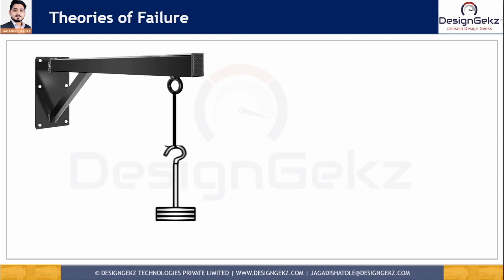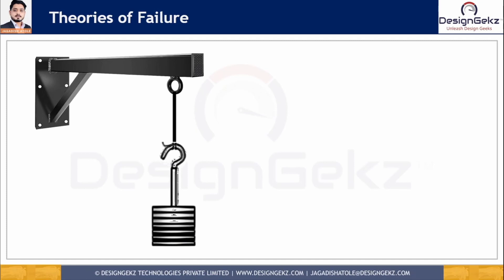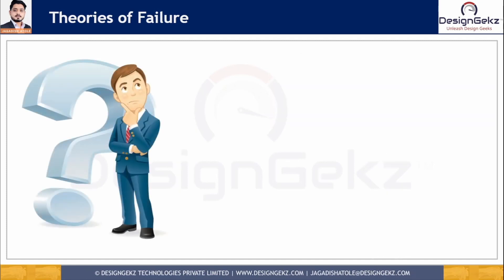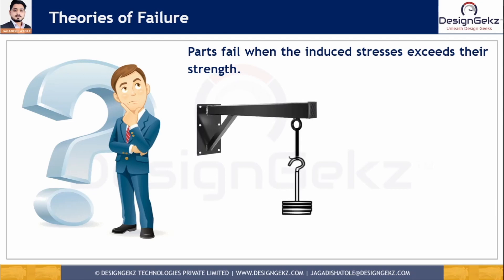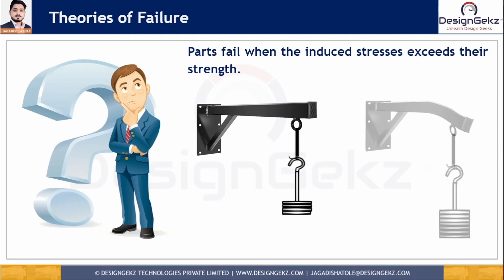When we apply a load on an object like a bracket, initially we apply a load of some amount which the bracket can sustain without failure or deformation. If we keep on increasing the magnitude of the load, at some point the bracket will fail. The part fails when the induced stresses exceed its strength — when we stress the part beyond its strength, the bracket will fail.